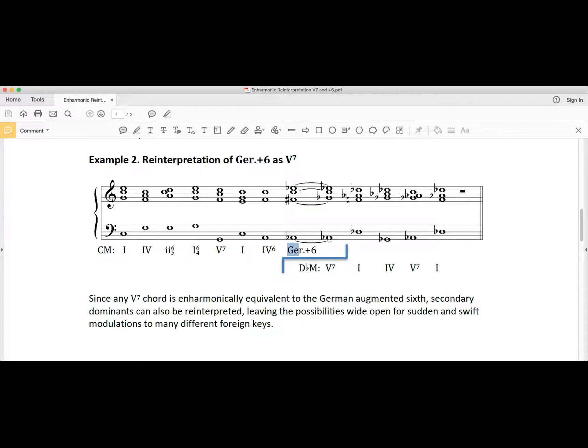But then look what I do to it. I take the old lay, I keep it here in the bass, but now I'm reinterpreting lay as sol. Lay becomes sol and then look at what I do up here. The old fee, F sharp, is now going to be reinterpreted as fa in the new key. A flat is sol in the key of D flat major which is where we are going, and G flat is fa and enharmonically equivalent to F sharp which was fee in the key of C major.